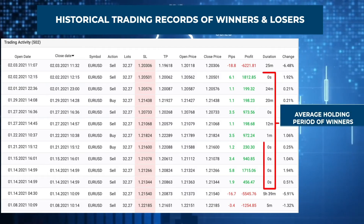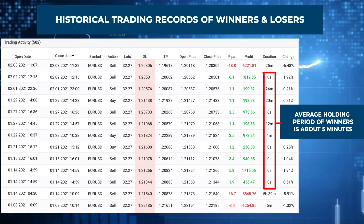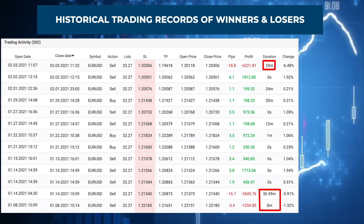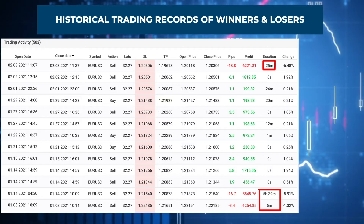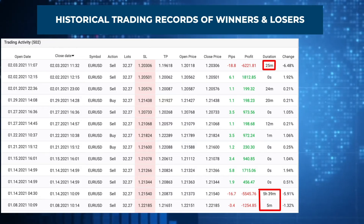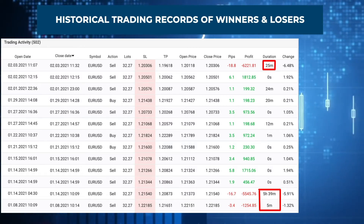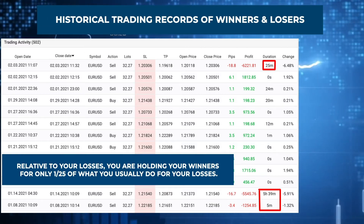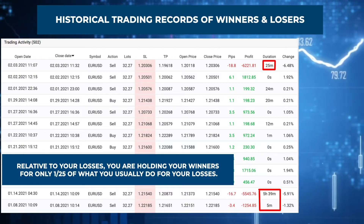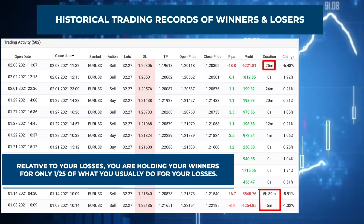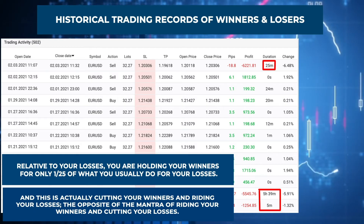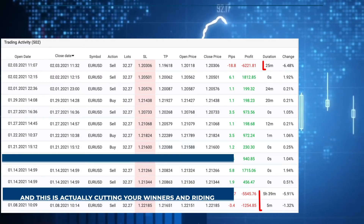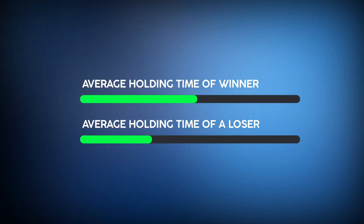So what this really means is that your average holding time for a winner should surpass that of a loser. For example, suppose you pull out your historical trading record and compute your average holding period for winners and losers. If your average holding period for winners is about five minutes but your average holding period for losers is about two hours, then you know for a fact that you are closing off your trades too early and taking profits too soon — because relative to your losses, you are holding your winners for only one twenty-fifth of what you usually do for your losses.